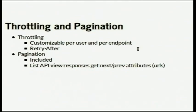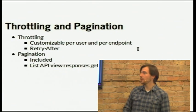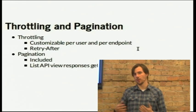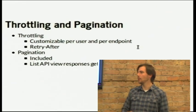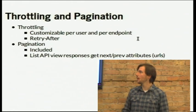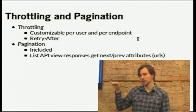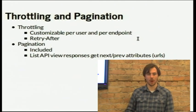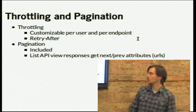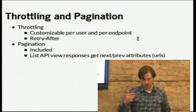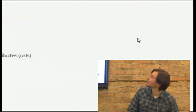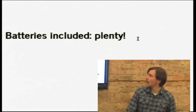You also get throttling, so you can limit the number of times a client can hit an API endpoint. You can do it based on whether the client is logged in or not — anonymous users might be limited to 60 requests per hour, while logged-in users can make 1,000 per hour. It will return a Retry-After header, which is the HTTP standard indicating when the client should try again because they're currently being throttled. You also get pagination: if you're getting a long list, you get a next and previous URL to traverse the list.